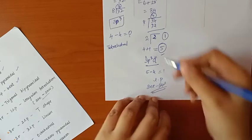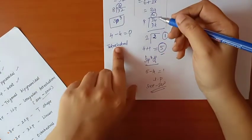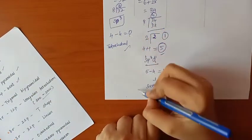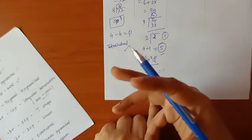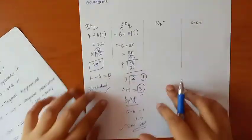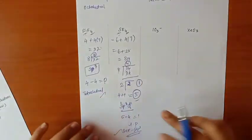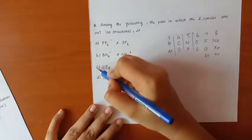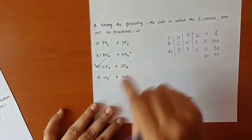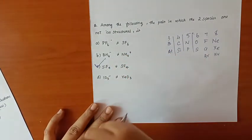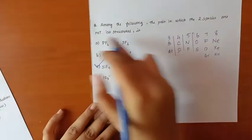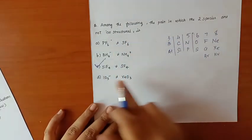So SiF4 is tetrahedral and SF4 is seesaw — they are not isostructural. This is the correct answer to the question.